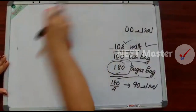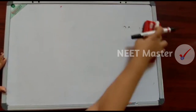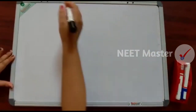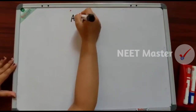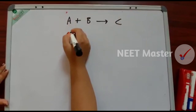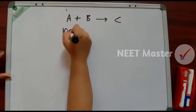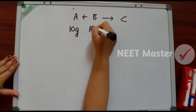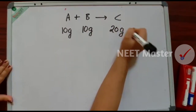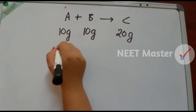Let's go to chemistry. Let's take another example: A, B, C — A plus B giving product C. Here is a standard condition: 10g A reacts with 10g B to give 20g C. That is the standard condition. Let's take a look.